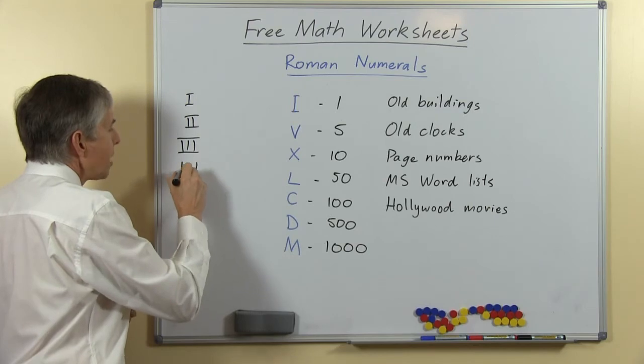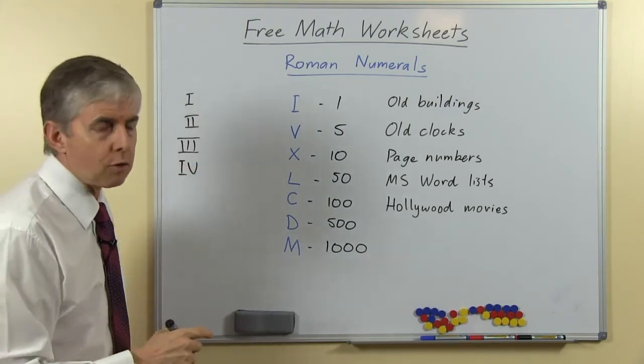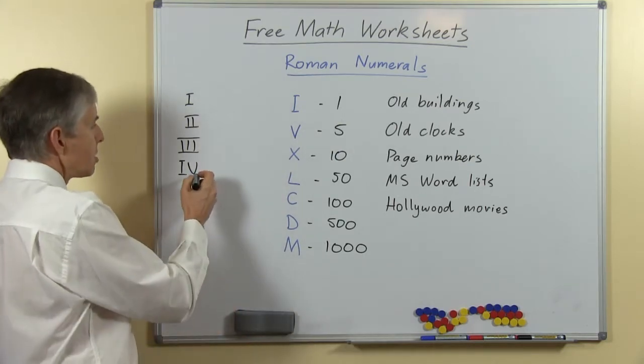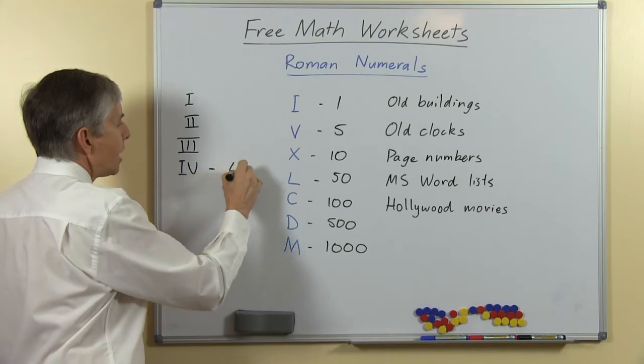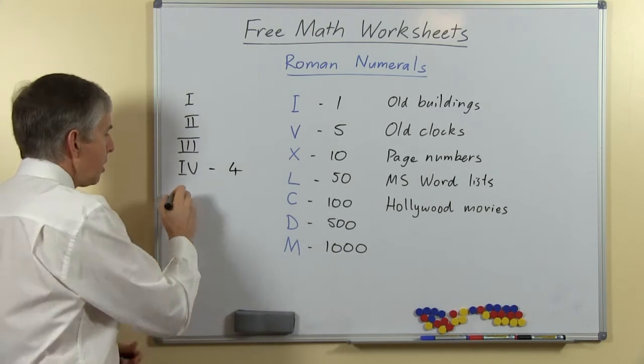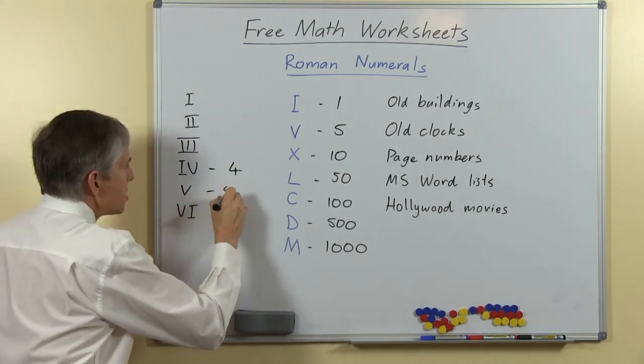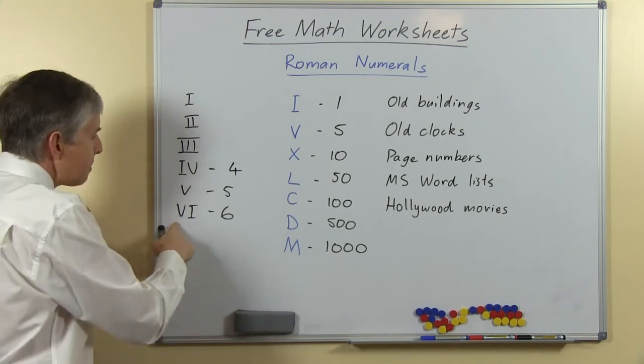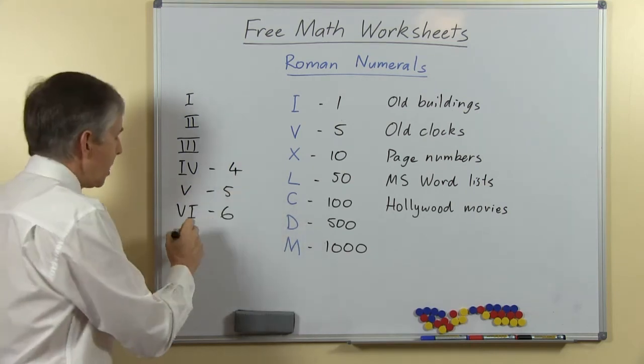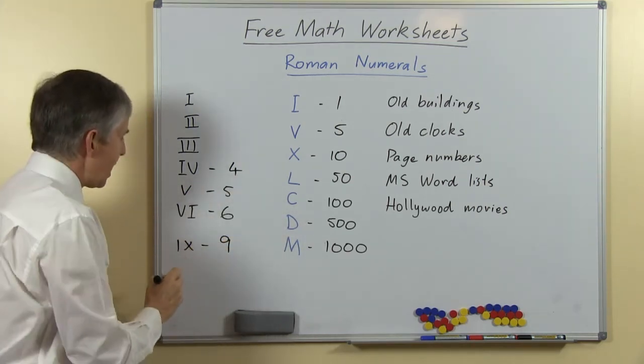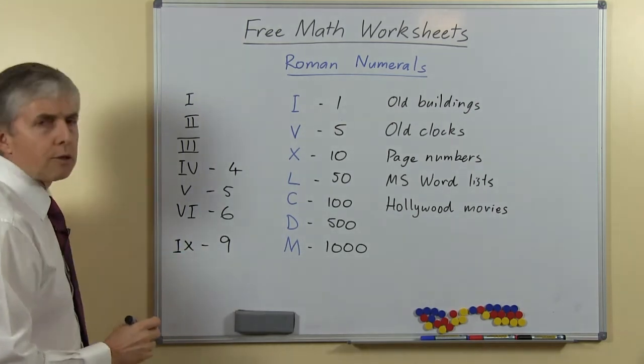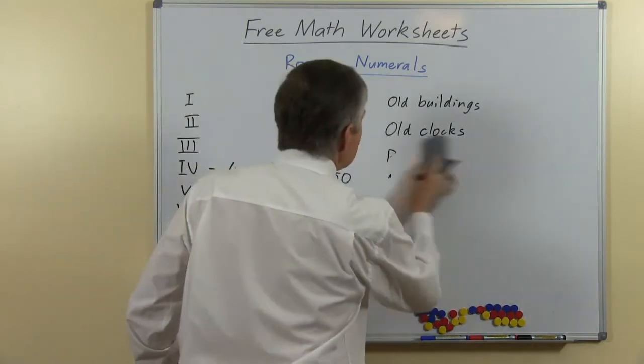The interesting part about that is that there was also a subtractive rule—I should say there is a subtractive rule, because we still use Roman Numerals—so that for certain values you would subtract one value from another. So I'll just add a couple more here. So we've got 5 and 6. Clearly 6 is made up of 5 and 1, but if we put the 1 in front of the 5 then we take it away and make 4. Similarly we have 9 as 1 before 10. So there's that extra rule that students need to get used to.